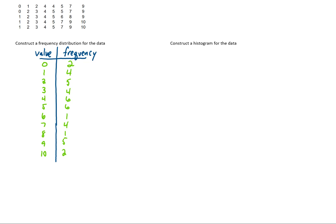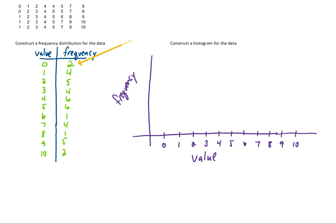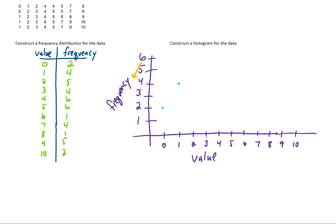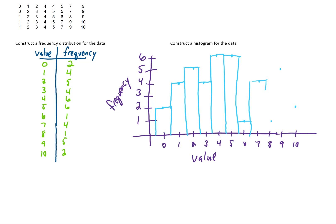The next question asks us to construct a histogram for the data. A histogram looks like a bar graph. On the horizontal or x-axis we have the value, and on the vertical or y-axis we have the frequency. I'll put values of 0 to 10 on the horizontal axis and frequencies 1 to 6 on the vertical axis. For each value we mark the frequency with a dot, then make a bar for each dot. So our histogram ends up with bars for each data value — that's what it looks like for this data.